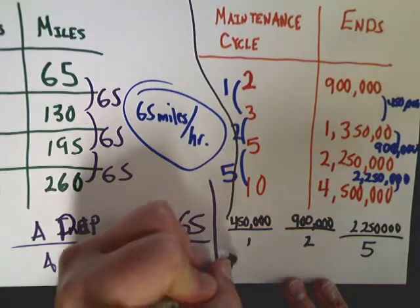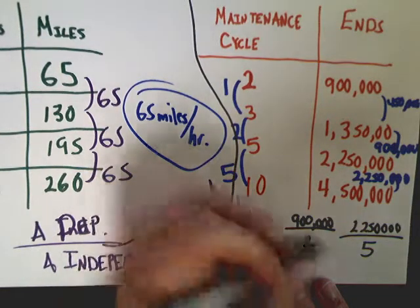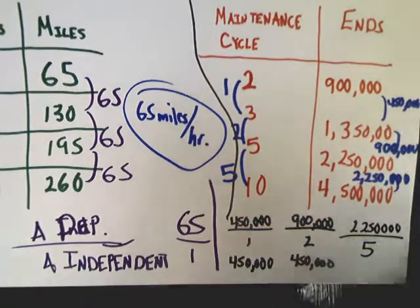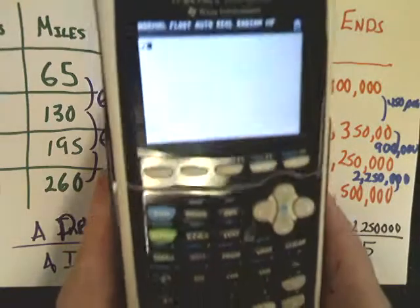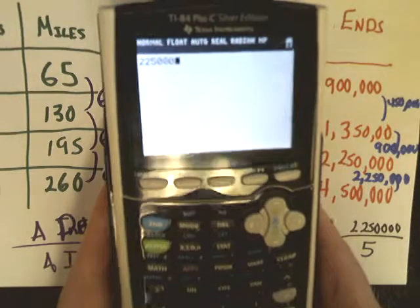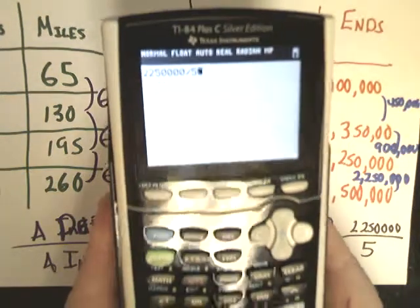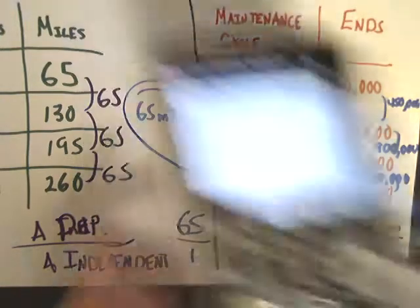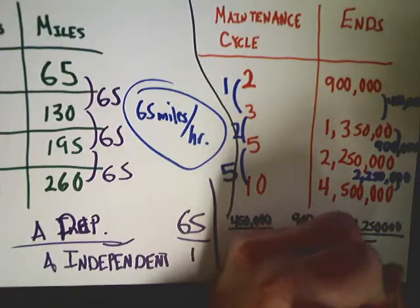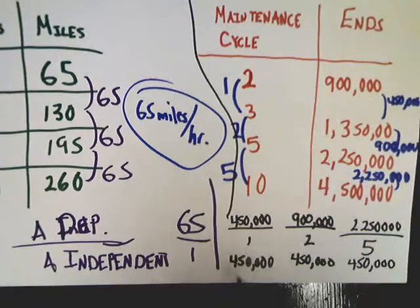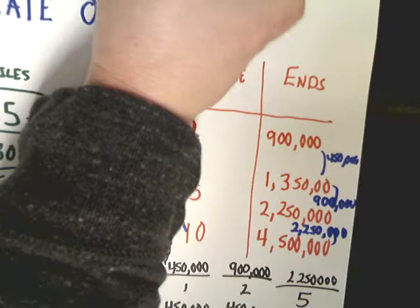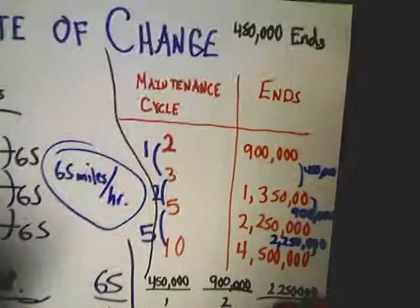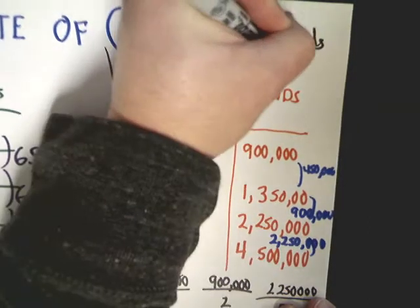So, I'm going to mark this out, and I'll do 450,000 over 1. I'll do 900,000 over 2, and then I'll do 2,250,000 over 5. And if I do this, I end up getting 450,000. I do this one, I get 450,000. And in case you wouldn't trust that the last one would be what I said it was, 450,000, just like I said.